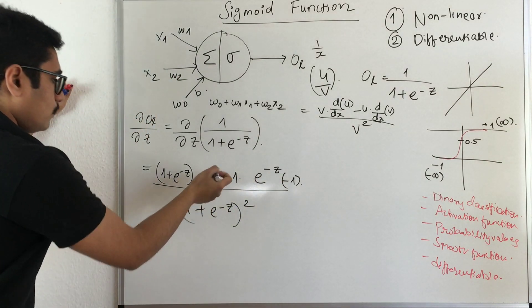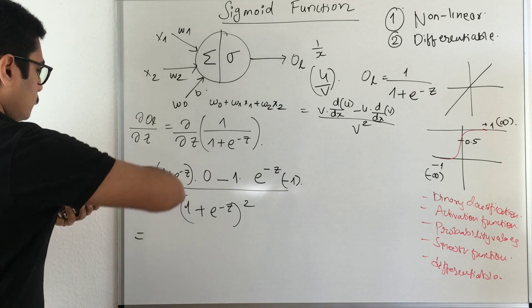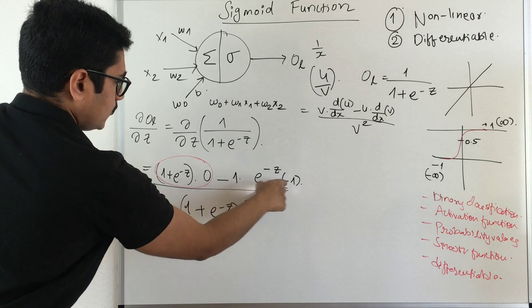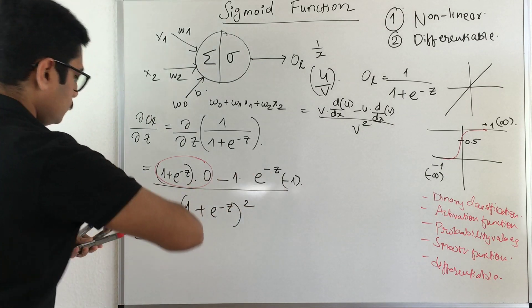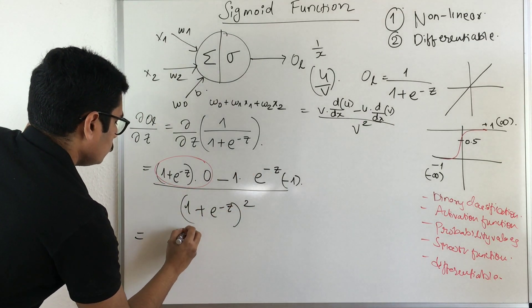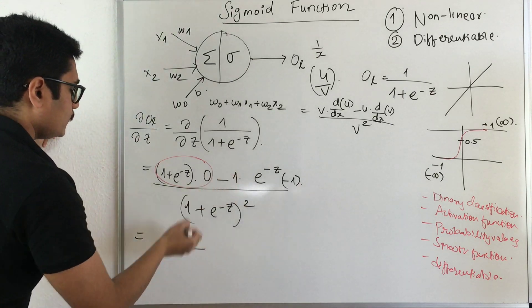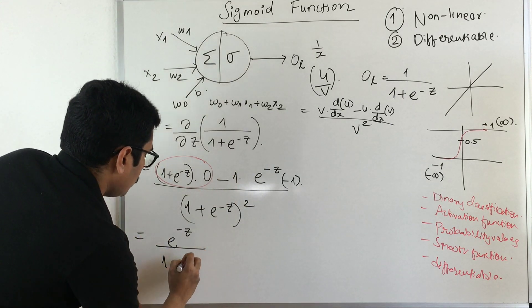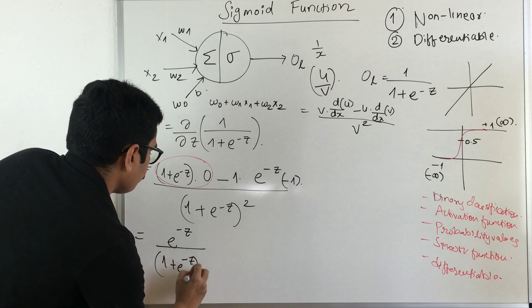This portion becomes 0, and then you have a minus outside. You multiply these two minuses, which gives you e^(-z) with a positive sign in front, and in the denominator you have (1 + e^(-z))^2.